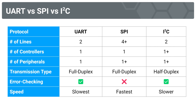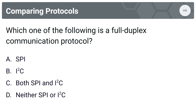The bigger picture is that no single protocol dominates in all categories. You have to give close consideration to how you are applying a protocol to your project: how many controllers and peripherals you need, whether transmission speed is critical, whether you need a small form factor with fewer lines. These are the kinds of considerations when choosing between UART, SPI, and I2C.